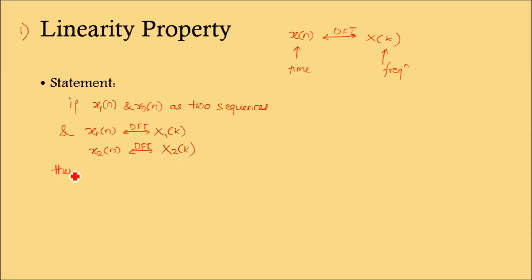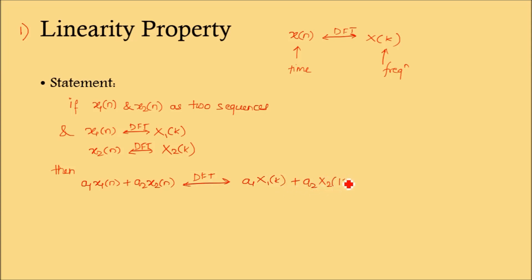Then the linearity property says that if a1·x1(n) + a2·x2(n), then the DFT is a1·X1(k) + a2·X2(k). It means if sequences are scaled by constants a1 or a2 and added, the output DFT is also the addition of the individual DFTs multiplied by those constant values. This is the property called the linearity property.